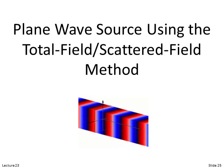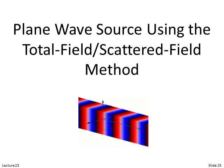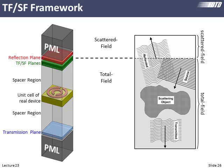Now, on to our total field scatter field source and how we generalize it for a fully three-dimensional model. We have our grid scheme using the total field scatter field framework to inject a one-way source. That source emanates from a line across the grid downward toward our device, filling the entire cross-section of our three-dimensional grid. Everything below the interface is total field quantities and above is scattered field quantities. The concepts are the same — we just have an extra dimension now.